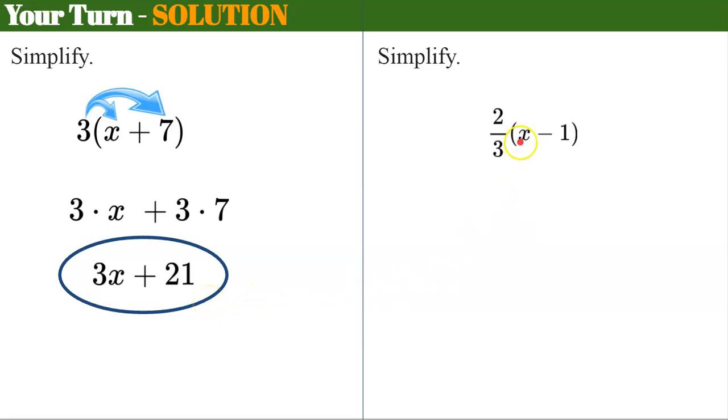Let's try this one. We have a rational value that we're distributing, 2 thirds. So I'm going to do 2 thirds times x which is 2 thirds multiplied by x and then I'm going to do 2 thirds times negative 1 or subtract 2 thirds times 1. 2 thirds times x is just that, 2 thirds x. Bring down your subtraction sign and anything times 1 is itself. So in simplest form my expression is 2 thirds x subtract 2 thirds.